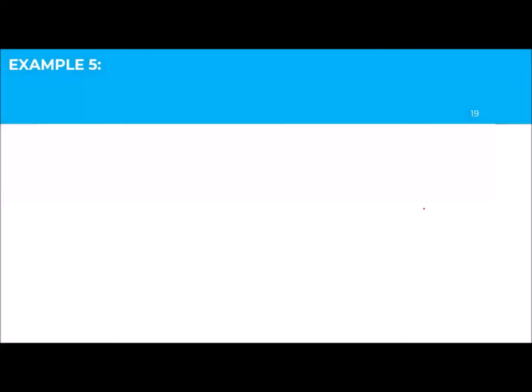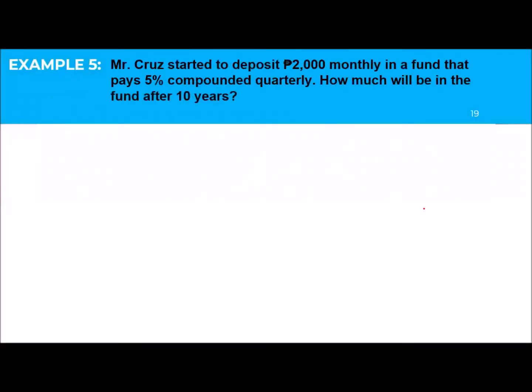Let's have this problem: Mr. Cruz started to deposit 2,000 pesos monthly in a fund that pays 5% compounded quarterly. How much will be in the fund after 10 years? Let's analyze why this is a general annuity — he deposits monthly, but the interest period is compounded quarterly. They are not the same, so this is a general annuity.